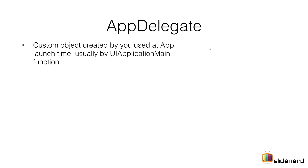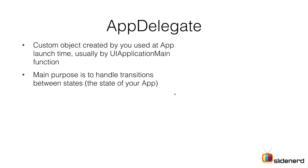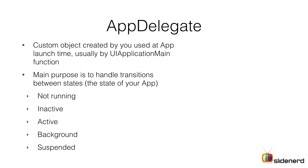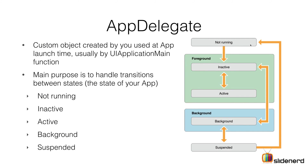Let's have a final look at the AppDelegate.swift file. It is a custom object created at launch time thanks to the UIApplicationMain function. Its main purpose is to handle transitions between states of your app. The app can be in five states: not running, inactive, active, background, and suspended. Initially the app is not running; when the person starts the app it briefly becomes inactive, then active. When the user minimizes the app or goes to the home screen it enters the background state, and when iOS decides there isn't enough memory it suspends the app.